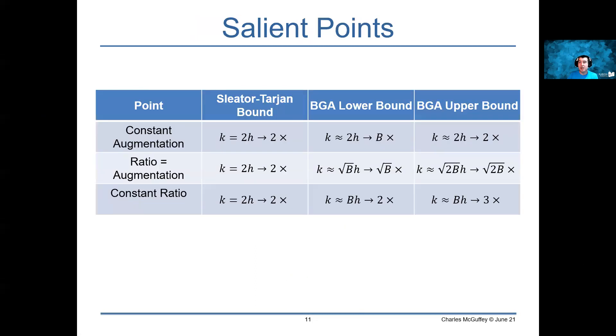Another way of looking at this is if you look at the salient points that you might think about, which in the simple paging problem with LRU is just a constant augmentation of a factor of 2 results in a competitive ratio of a factor of 2. In the block granularity aware problem, you need a b times augmentation in order to get a constant ratio. Essentially, your ratio and your augmentation multiplied together give you something that's order of b. That's both true for our lower bound and our upper bound, which differs by at most a factor of 3. You can see throughout the salient points that it's very close and off by small constant factors.